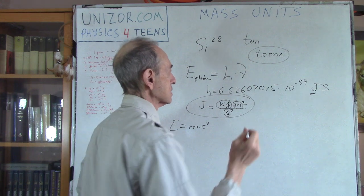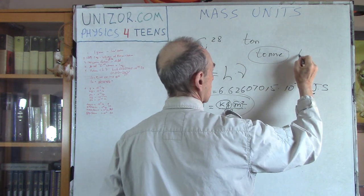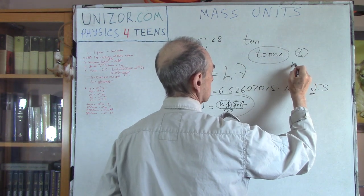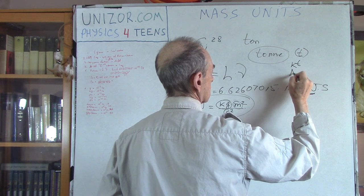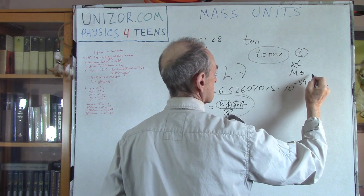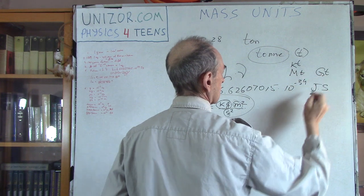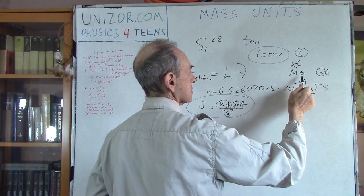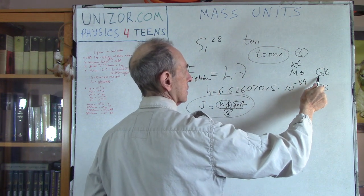And there is a ton, abbreviation is ton. There is a kiloton, there is a megaton, and there is a gigaton. So it's a thousand tons, million tons, and billion tons.